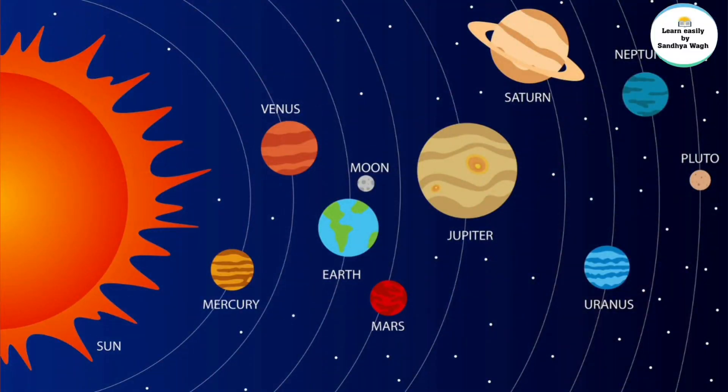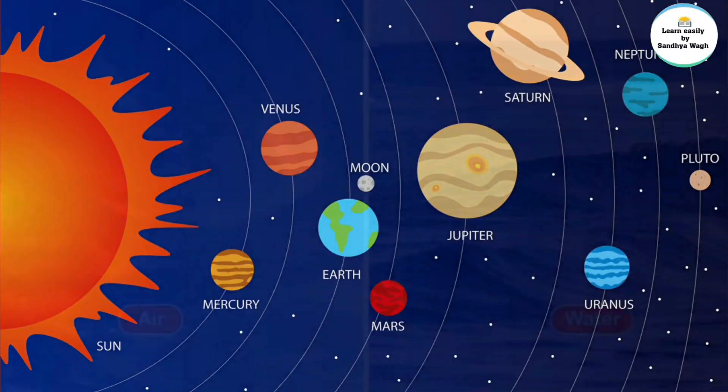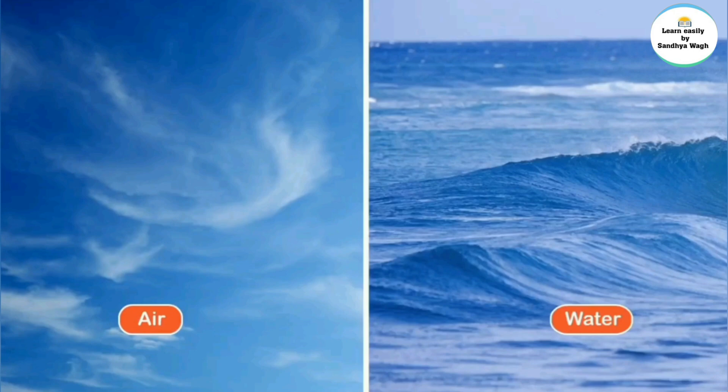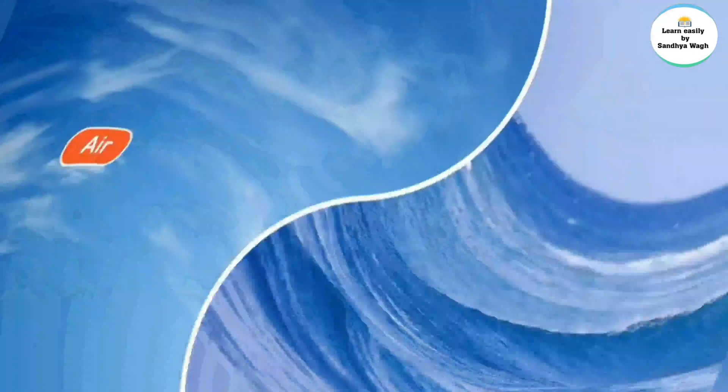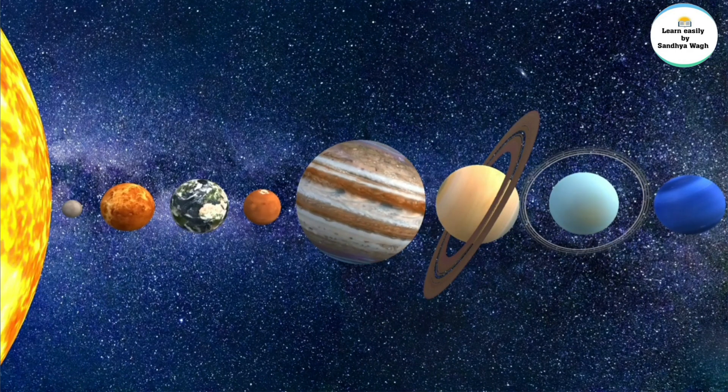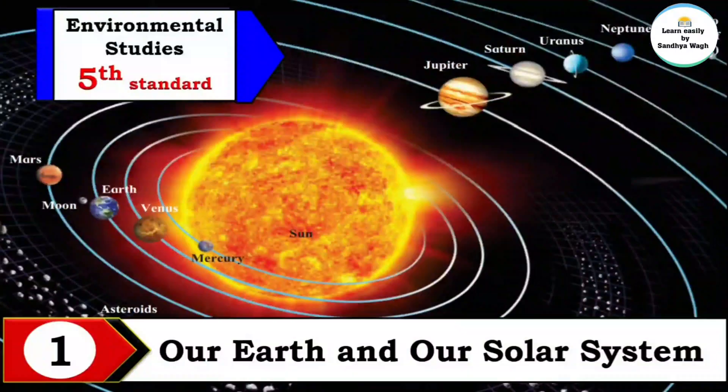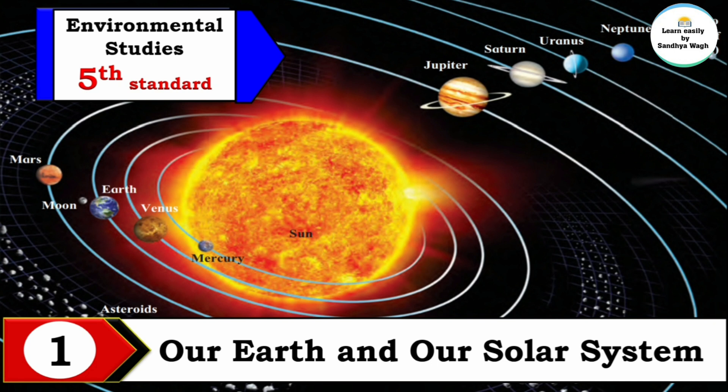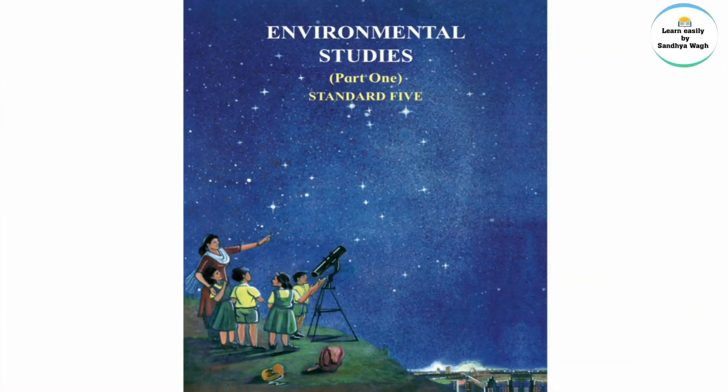No other planet has life. It has air and water. We are always curious about other planets and our solar system, right? So in our today's video, let's learn more about our mother earth and our solar system from your environmental studies textbook standard five.